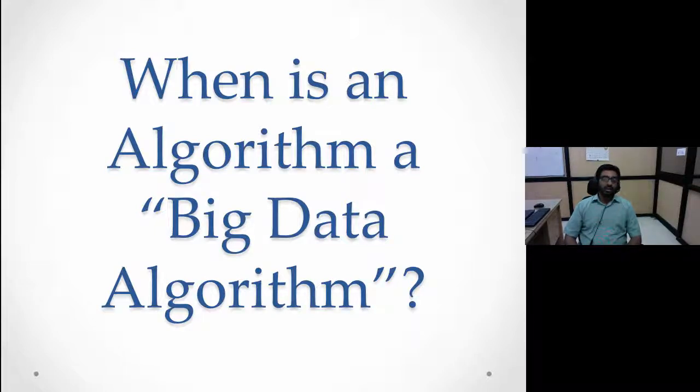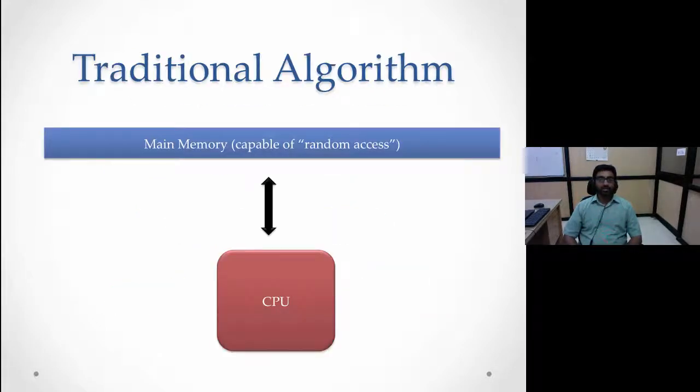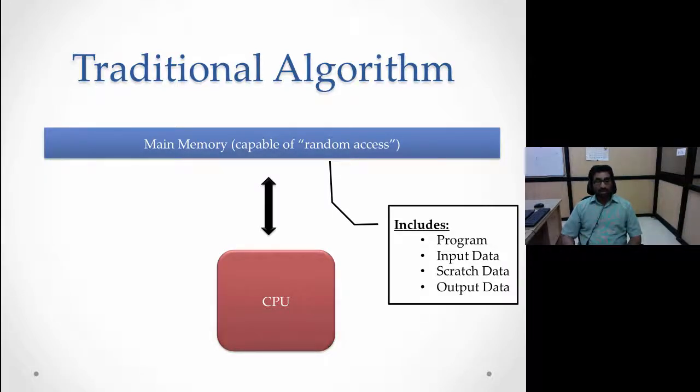When is an algorithm a big data algorithm? To understand this, let's contrast with traditional algorithms. A traditional algorithm typically consists of a CPU executing code with access to main memory. The main memory can be accessed at random locations and includes the program executing on the CPU, the input data, the scratch information generated as the algorithm executes, and the output data.